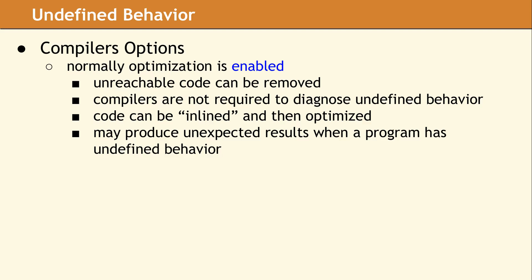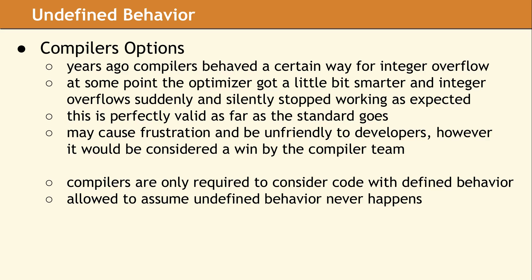Once you turn optimization on, the compiler is not just looking at the literal translation of your code, but at what your code means and whether it can be restructured to improve performance. Among other things, the compiler is allowed to remove unreachable code, and undefined behavior means that section of code is not reachable. Compilers are not required to tell you if something you have done results in undefined behavior, because it often is impossible to determine this after the optimizer has run. With the optimizer on, if your program has undefined behavior, it is very likely to produce extremely strange results.